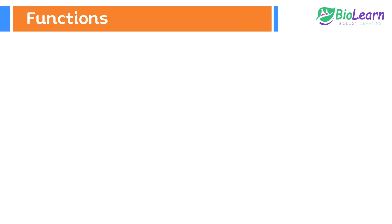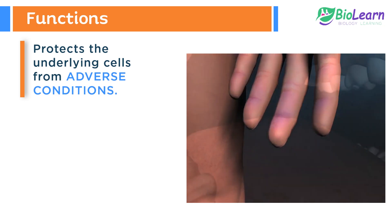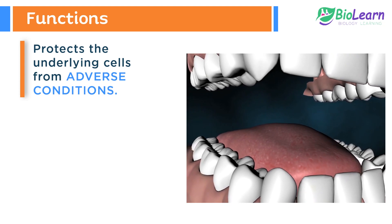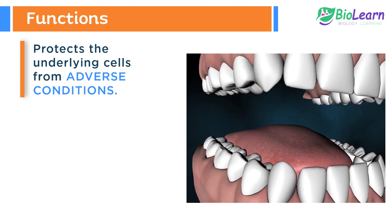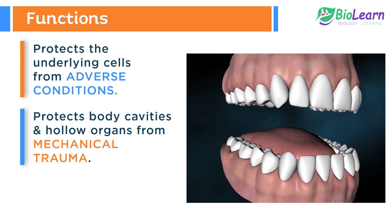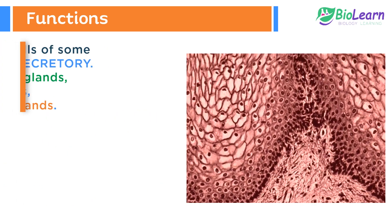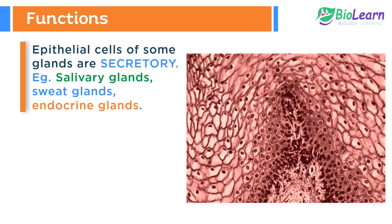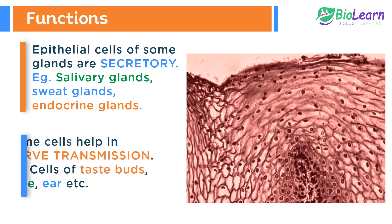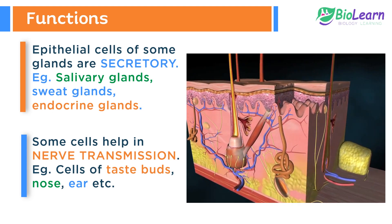Epithelium is mainly a protective tissue. It protects the underlying cells from adverse environmental conditions such as dryness, injury, and entry of pathogens. It also protects the body cavities and hollow organs from mechanical trauma. It helps in absorption of substances in the alimentary canal. A few cells are secretory, such as the cells of the salivary glands, sweat glands, and endocrine glands. Some cells, like the cells of taste buds, nose, and the ear, also assist in nerve transmission.